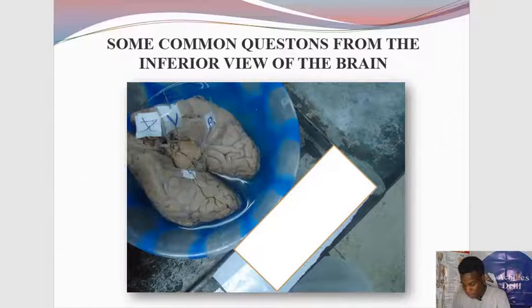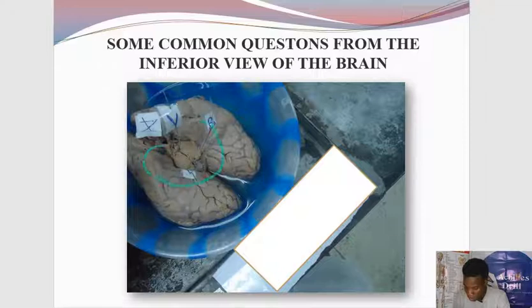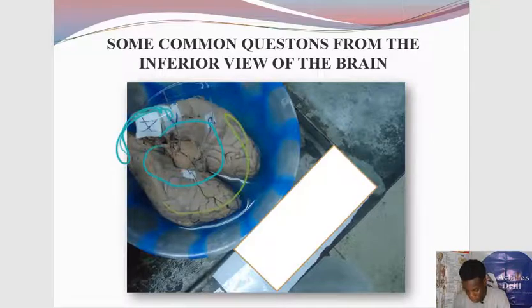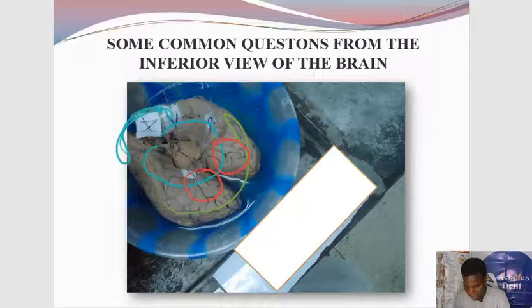In this specimen you can see some structures have been pinned along the inferior view of the brain and you'll be asked to identify some of these structures. Get your orientation right: this is the frontal part, to the back is the posterior part, and here are the two cerebella sitting in this part. We'll come back to this picture and identify the structures that are pinned.